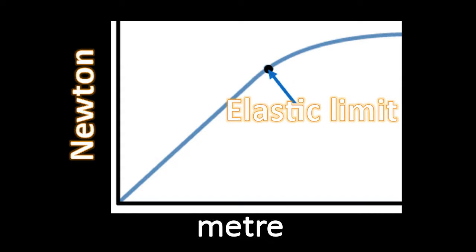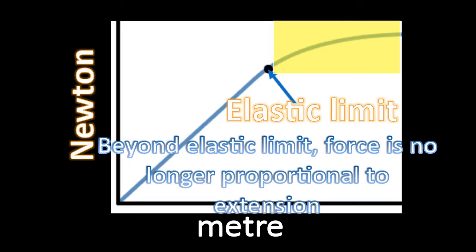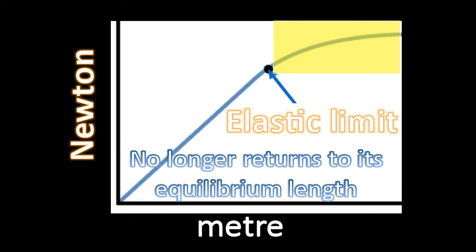This limit is called the elastic limit, where the graph no longer behaves in a linear fashion. For that particular part of the graph that I've highlighted, if the force or the extension exceeds the elastic limit, if it goes beyond that point, then, notice the force is no longer proportional to the extension, and as a result, the object or the material will no longer return to its original state, to its equilibrium state, or to its equilibrium length.